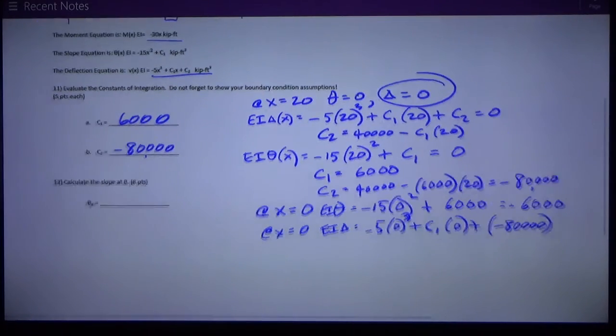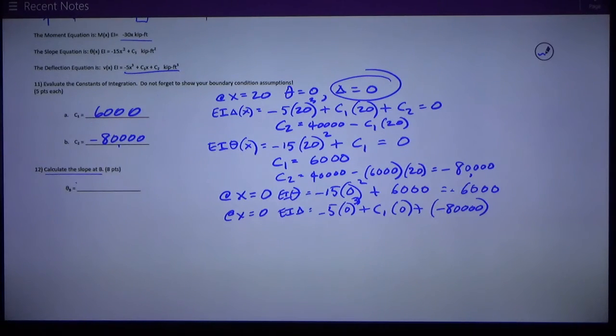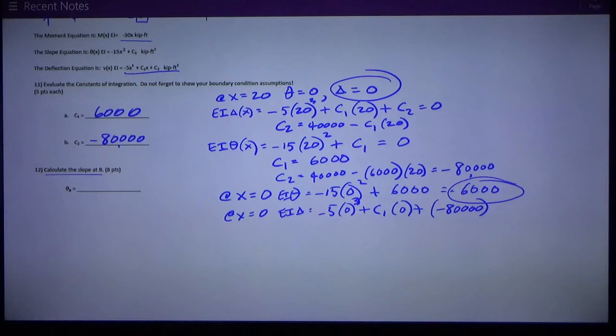Therefore, I can check that at X equals zero, EI delta is equal to negative 5 times zero cubed plus C1 times zero plus C2, which C2 is equal to negative 80,000. Therefore, the deflection at the end of the beam is negative 80,000, which at least the sign agrees. So, that's what these values are. C1 is 6,000. C2 is negative 80,000. Then I'm asked in part 12, question 12, to calculate the slope at B.